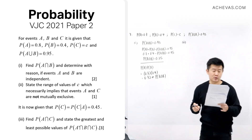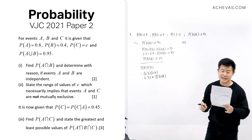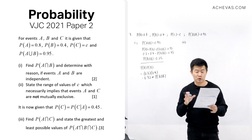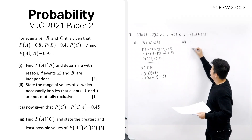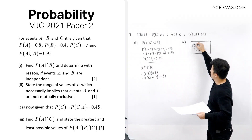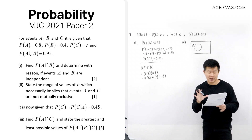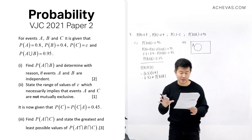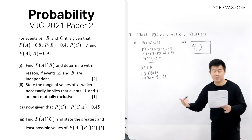Part two: we need to state the range of values of C which necessarily implies that A and C are not mutually exclusive. For A and C to not be mutually exclusive, they must overlap. On a Venn diagram, if A is here, then C cannot be entirely outside A — we look at the conditions to prevent that.